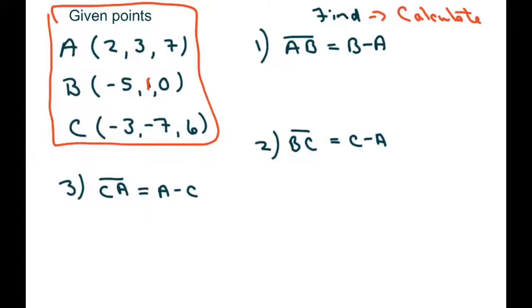And we're going to subtract for the first one, b minus a. So that's going to be negative five minus two, one minus three, and zero minus seven.